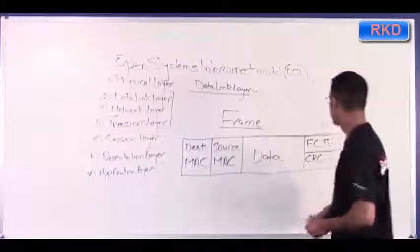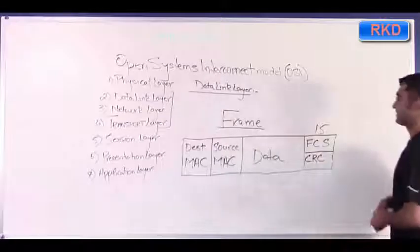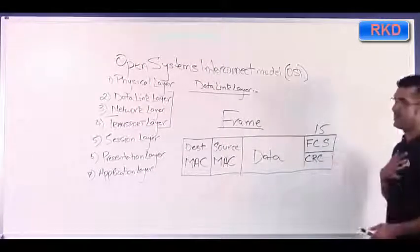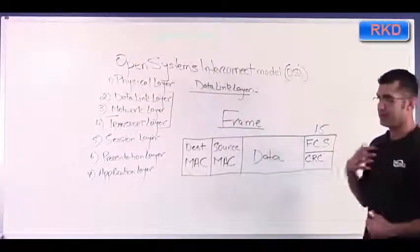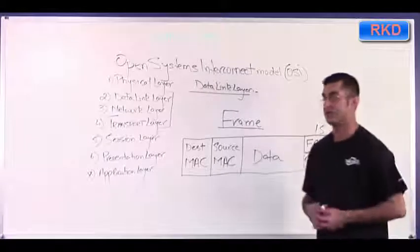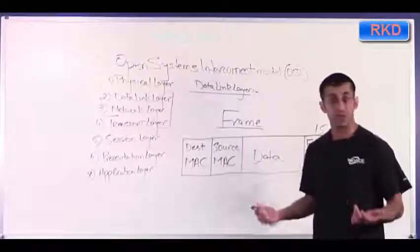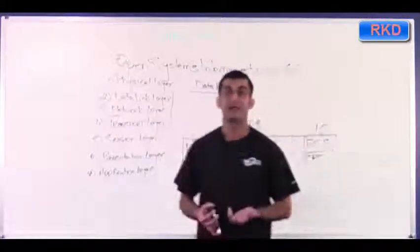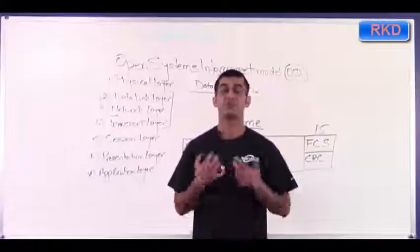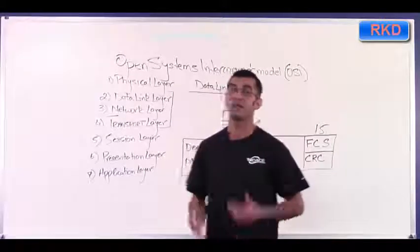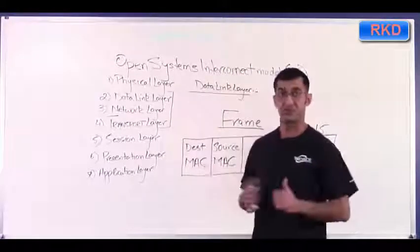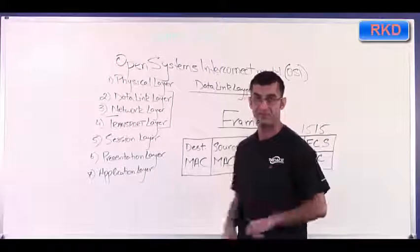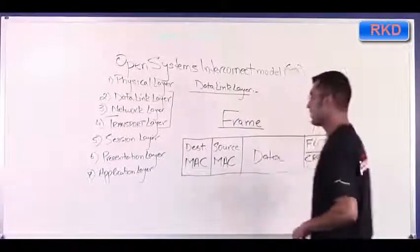If the numbers don't match — say the receiving end got the frame, did the calculation, and came up with 20 — that's a sure sign the frame was corrupted in transit, and the frame is discarded. The receiving end does not accept it; it simply drops the frame.